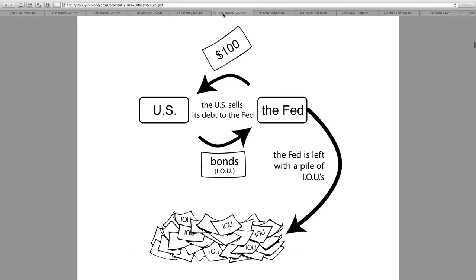Governments create debt as time goes on. A central bank is simply sitting there with the printing press and has one option: to buy the debt of that country. In this instance I'm showing the U.S. and the Fed, but it applies to all nations. The U.S. sells its debt to the Fed, the Fed gives it money and receives bonds — which are simply IOUs. Where does the Fed get this money? It's a printing press — literally printing it out of thin air. The Fed is left with a pile of IOUs, and I assure you this pile has been getting bigger.